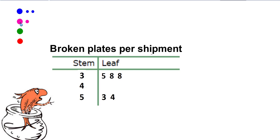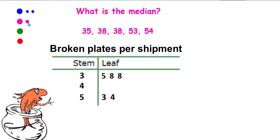Here's your next question: what is the median? Pause the video. To find the median of this set of numbers, first pull them off the stem and leaf plot. Once you've pulled them off, you're going to find the number that's in the middle. The median of this set of data is 38.